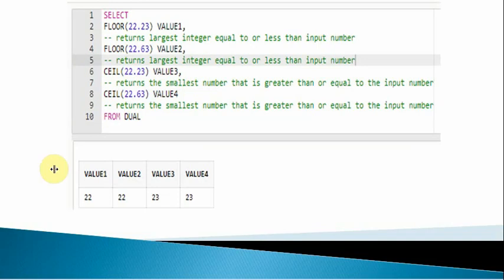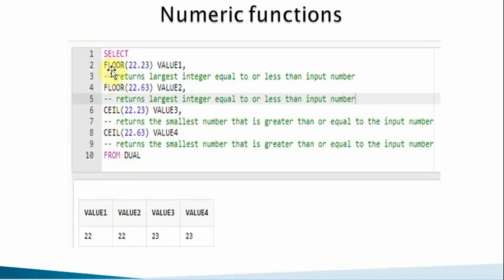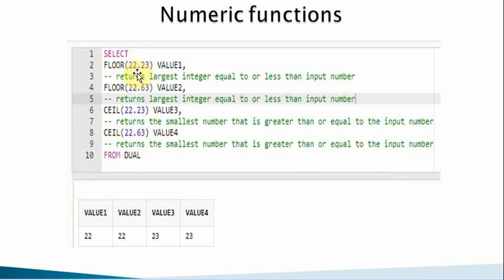Now we have the FLOOR and CEIL functions, which are similar to ROUND but with a key difference. The FLOOR function returns the largest integer that is equal to or less than the input number. For example, FLOOR(22.23) returns 22.